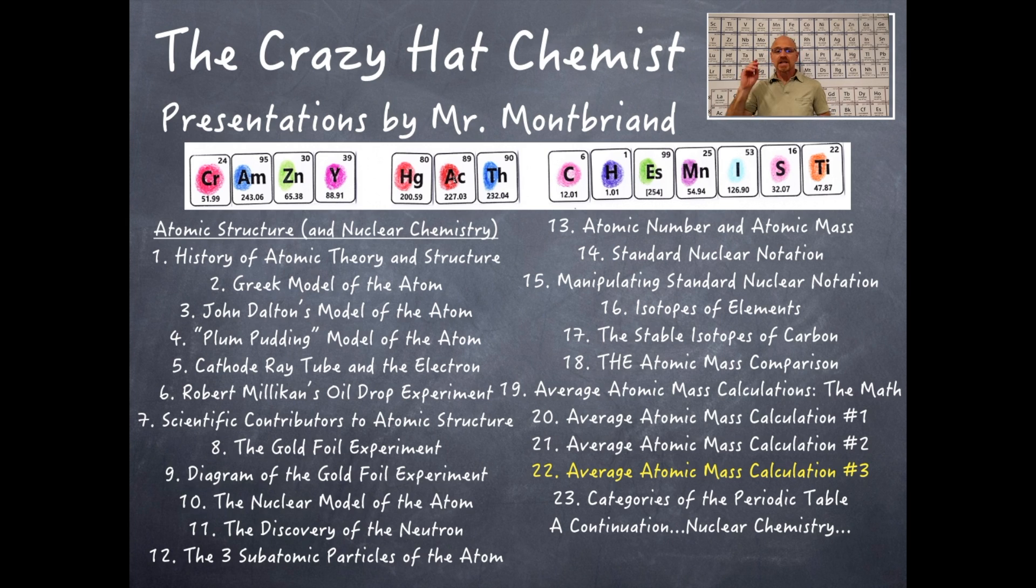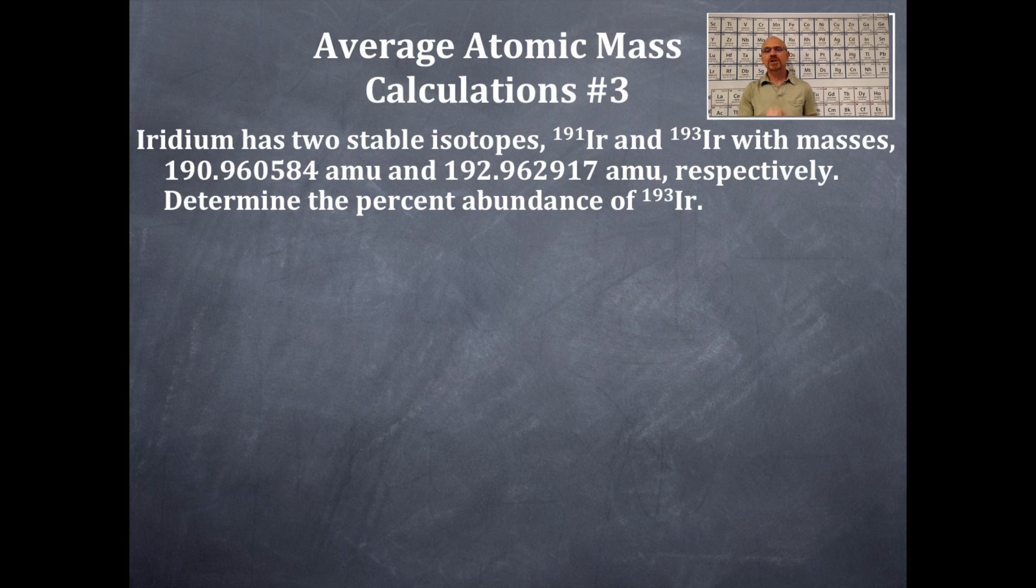Welcome to the Crazy Hat Chemist, number 22 in atomic structure. Let's get going. Bam! So, average atomic mass calculation number three.